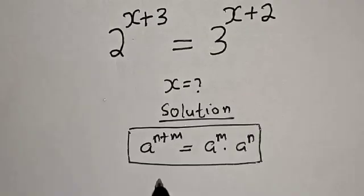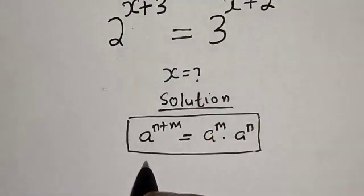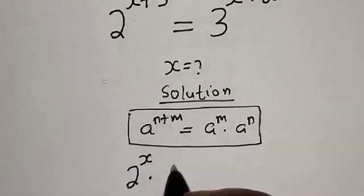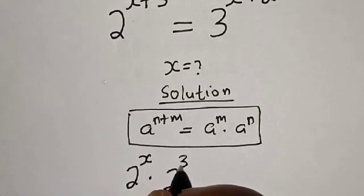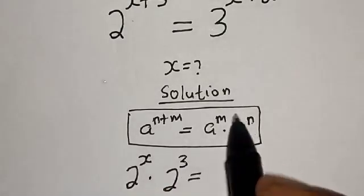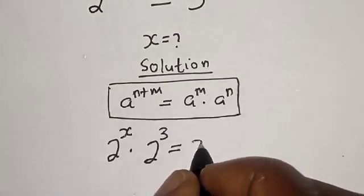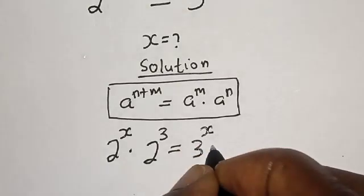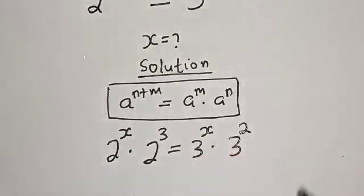Then, 2 raised to power x plus 3 becomes 2 raised to power x multiplied by 2 raised to power 3, is equal to 3 raised to power x plus 2, which becomes 3 raised to power x multiplied by 3 raised to power 2.